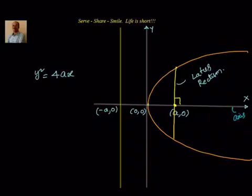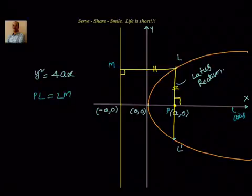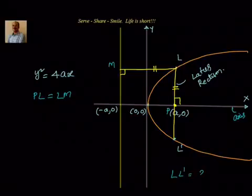Now, we know that the two extremities of the latus rectum, let them be L and L'. We know that L is a point on the parabola, which means its distance from the focus should also be equal to its distance from the directrix. Let M be the foot of perpendicular from L to the directrix, and let P denote the focus. Then PL = LM. Therefore, LL' = 2 × PL.